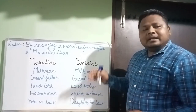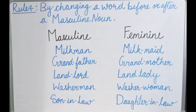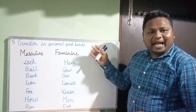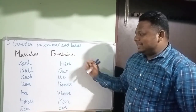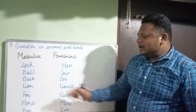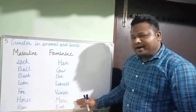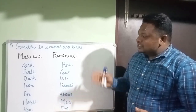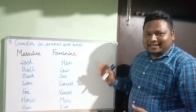Rule five: masculine and feminine nouns in birds and animals. Examples: cock → hen, bull → cow, buck → doe, lion → lioness, fox → vixen, horse → mare, ram → ewe, and many more. You should learn the masculine and feminine nouns for birds and animals.